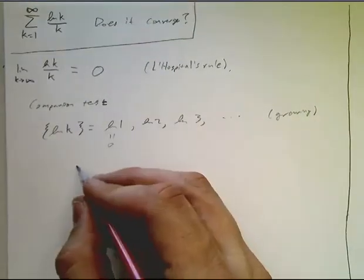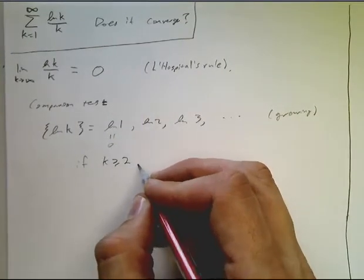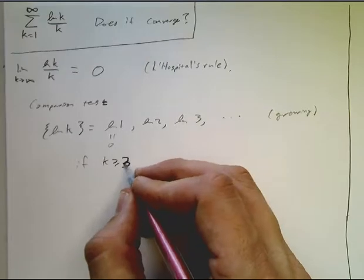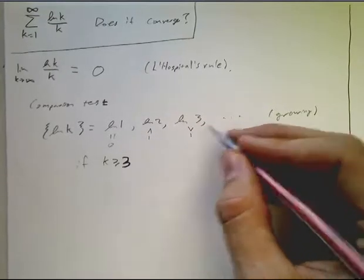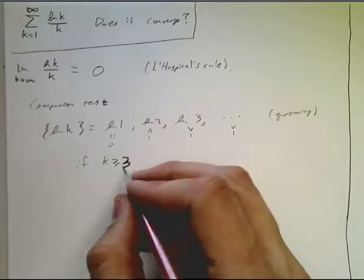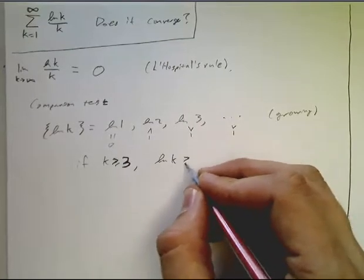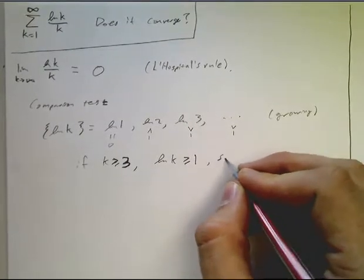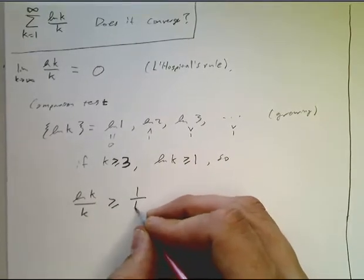So as long as K is greater than or equal to 2, well 3 I guess... This will be less than 1, but this will be greater than 1, and it keeps getting bigger. So if K is greater than or equal to 3, natural log of K is greater than or equal to 1. So natural log K over K is greater than or equal to 1 over K.